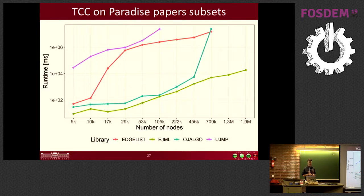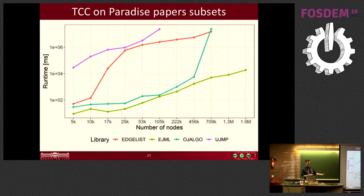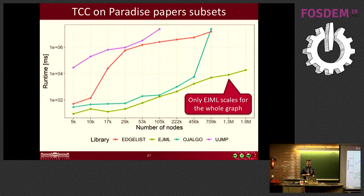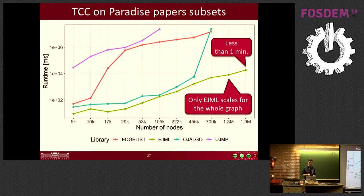Our benchmark results show the red line is our original edge list representation, which performed well for small samples of the Paradise Papers dataset (5,000 to 10,000 nodes). But for larger scales, all tools failed except EJML — the only one that worked for the full 2-million-node dataset. It provided decent performance: less than a minute to load and calculate typed clustering coefficients. Remember, this calculation previously didn't complete in multiple days — that's four or five orders of magnitude improvement.